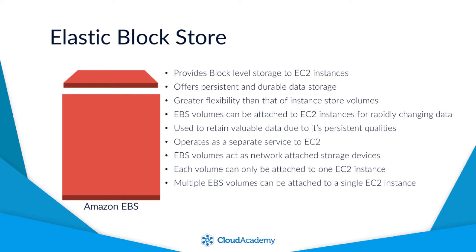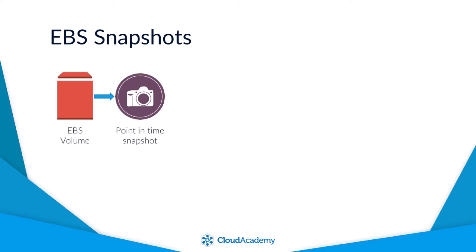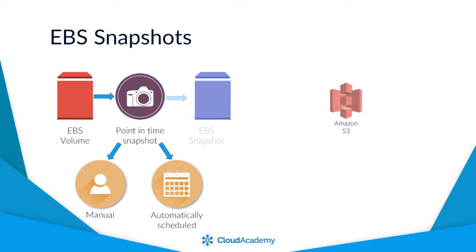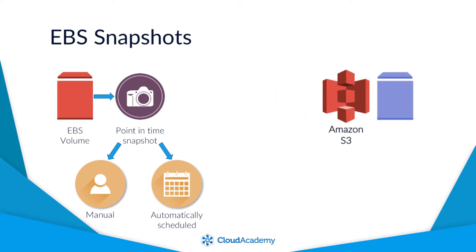Due to their persistency of maintaining data, it doesn't matter if your instances are intentionally or unintentionally stopped, restarted or even terminated — settings permitting — the data will remain intact. EBS offers the ability to provide point-in-time backup snapshots of the entire volume as and when you need to. These backups are known as snapshots. You can manually invoke a snapshot at any time or create code to perform this automatically on a scheduled basis. The snapshots themselves are stored on Amazon S3, so are very durable and reliable.